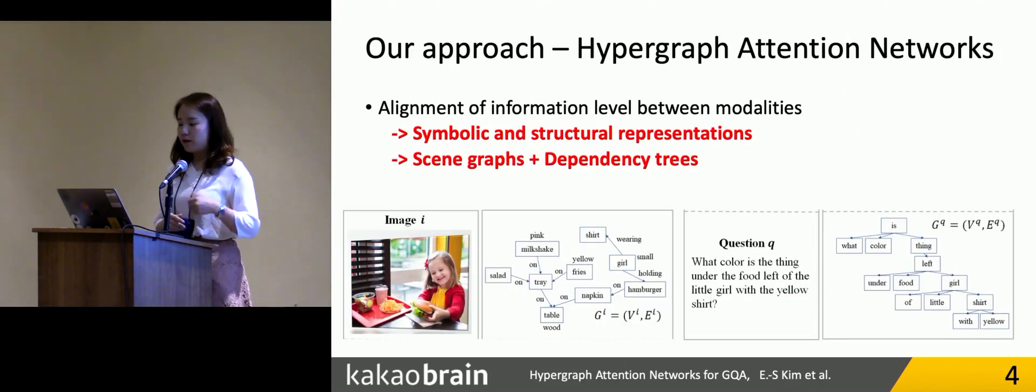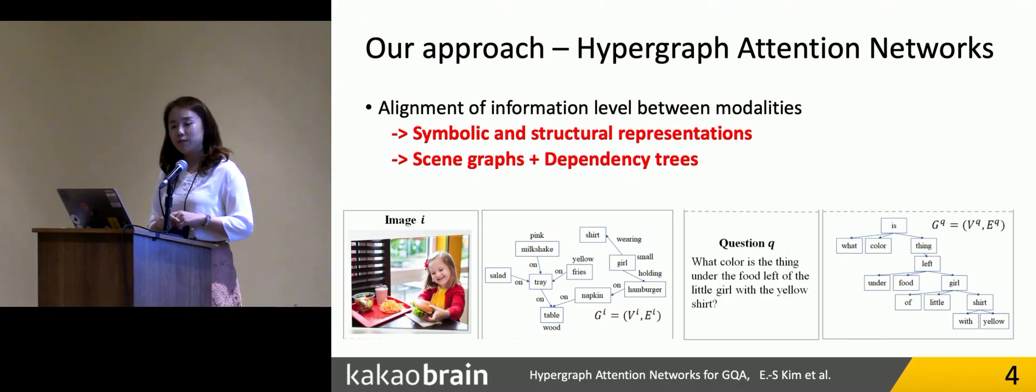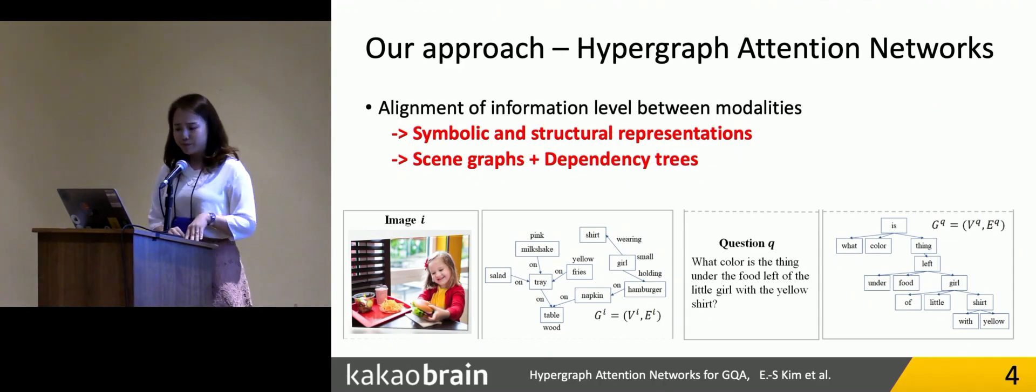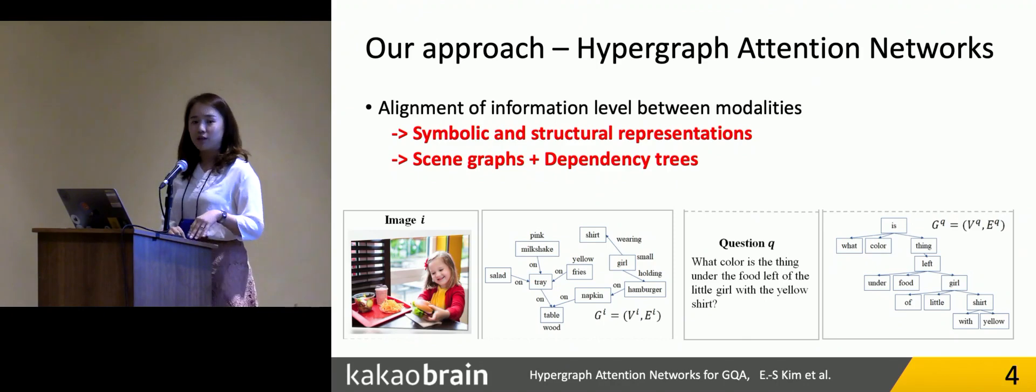Here are some ideas suggested in this work to resolve the mentioned two problems. First, to align the information level between modalities, we suggest to use the symbolic and structural representation for both modalities. For example, for the image representation, we suggest to use the scene graphs as the symbolic structure representations.